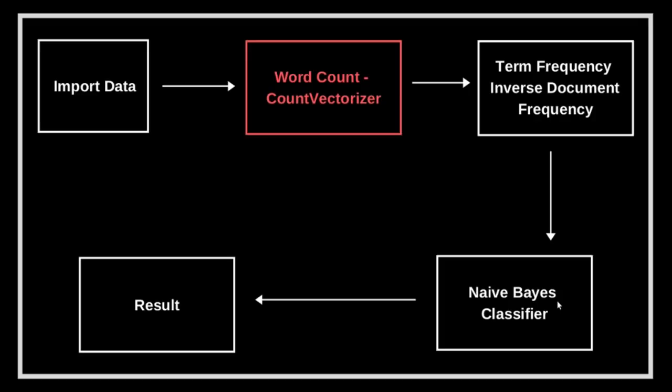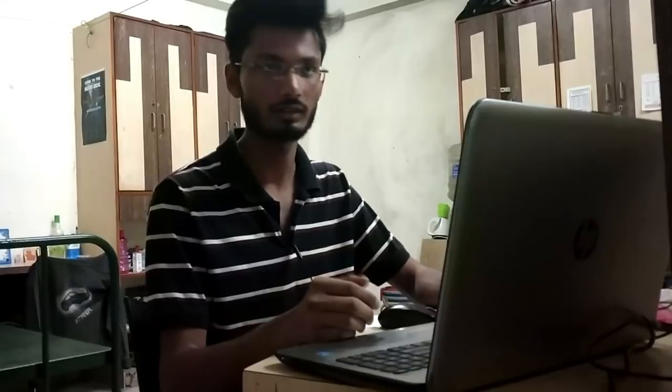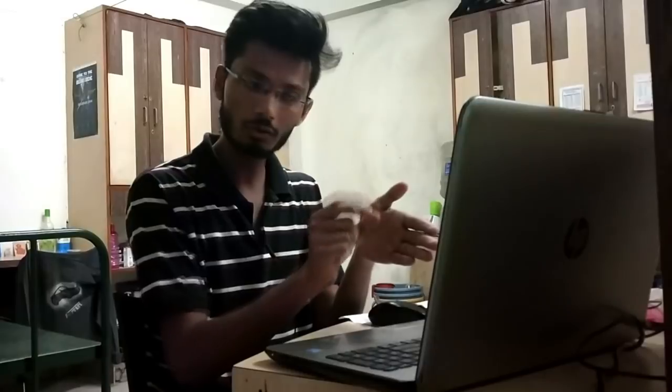Our next step is word count, that is Count Vectorizer. Let's get back to the Naive Bayes classifier concept. We count the number of times a particular word appears in a particular category, find the probability, and then classify it. But how do you make a machine count words? What Count Vectorizer does is assign a unique number to each unique word. Then it counts how many times that particular number appears. It doesn't check the text directly; it assigns a unique ID to each word and counts occurrences.